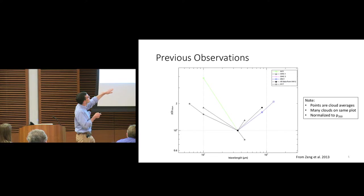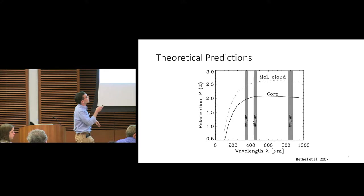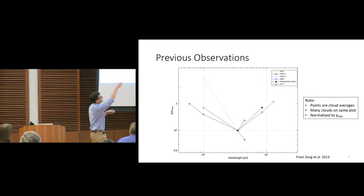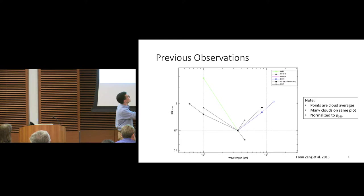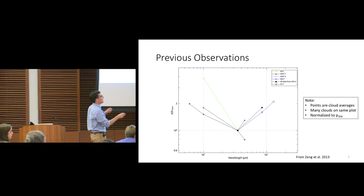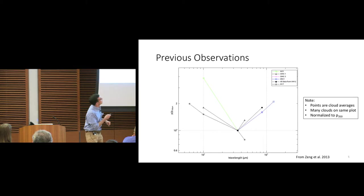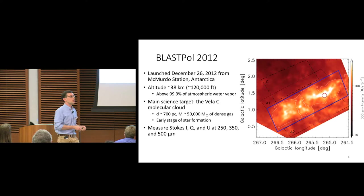We have a model to compare to, and these are previous observations of molecular clouds. If you look very closely — squint a little bit — the prediction was flat, but what was seen is a sort of weird V-shape: a pronounced minimum at 350 microns. We see declining polarization coming in from 100 microns and increasing out towards a millimeter. Each point is the average over a molecular cloud, with many molecular clouds plotted on the same plot. This was the state of the field before BlastPol.